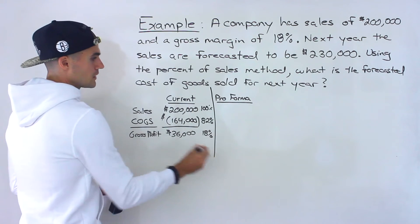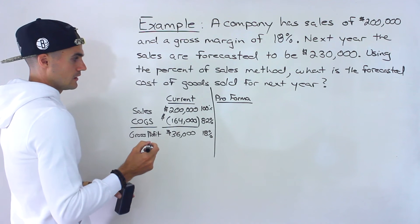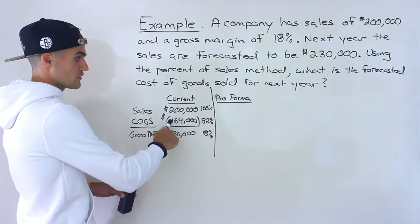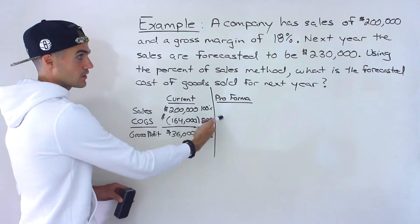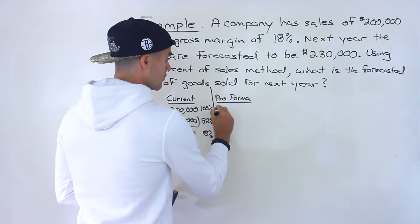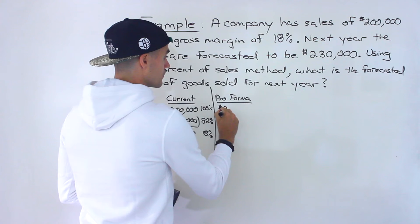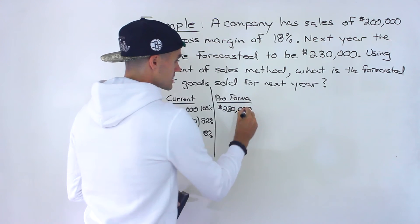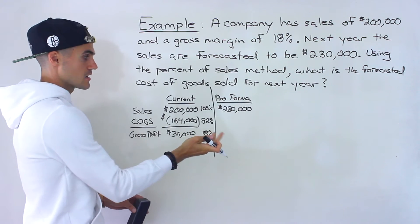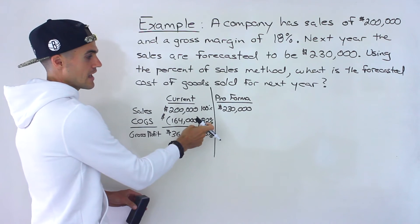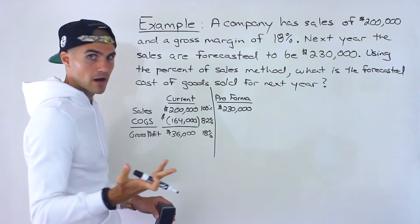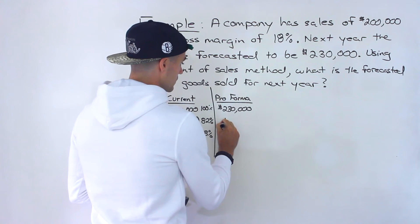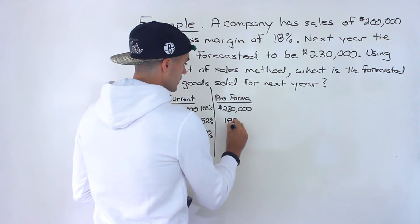Now we can find the forecasted cost of goods sold. We have the forecasted sales of $230,000. Since COGS will be that same percentage of sales, we take 82% and multiply it by the forecasted sales, which gives us $188,600.